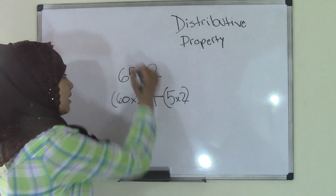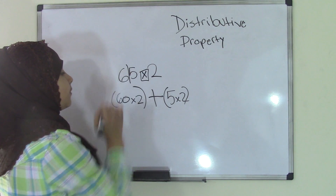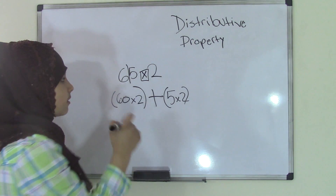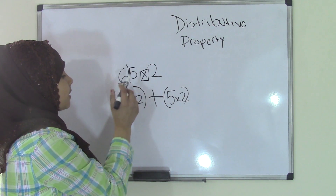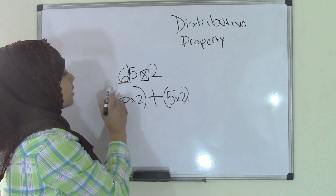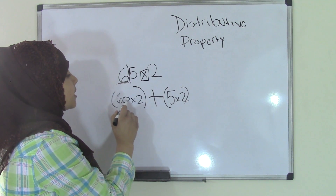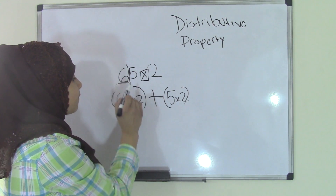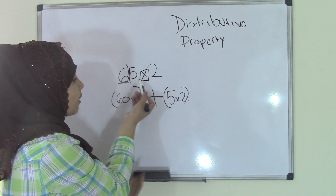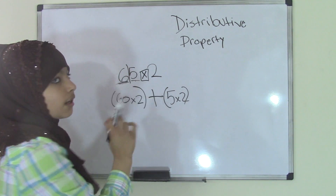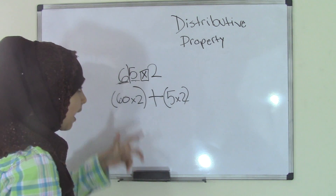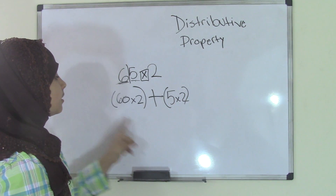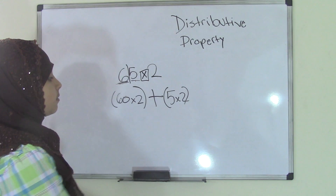Always keep in mind: split that first number — the one with the two digits. Since 6 is in the tens place, we will know it's 60 times 2. And since 5 is in the ones place, we will know it's not going to be 50, it's going to be 5 — so 5 times 2. So, 60 times 2 and 5 times 2.